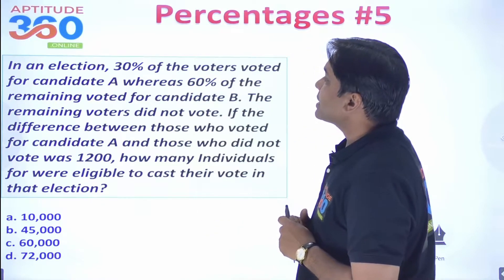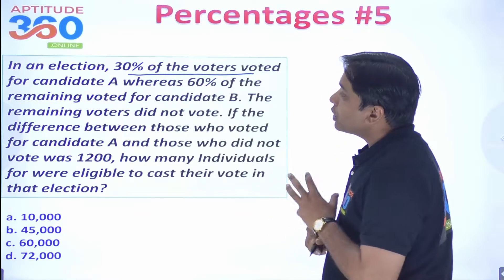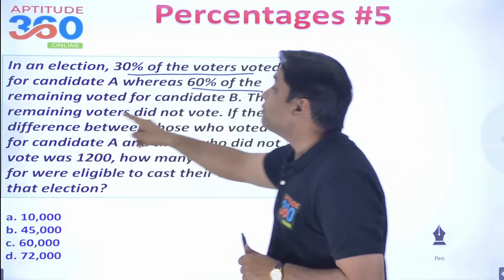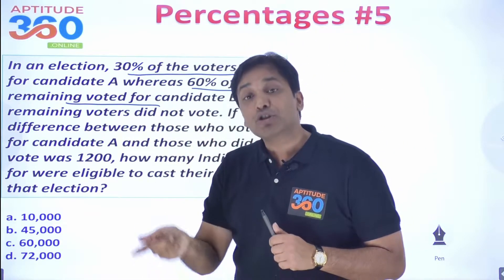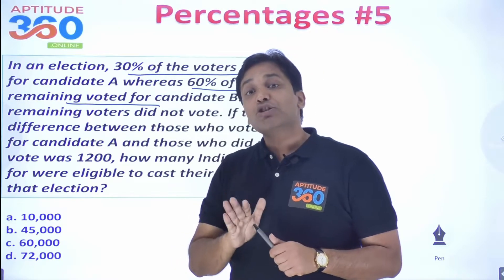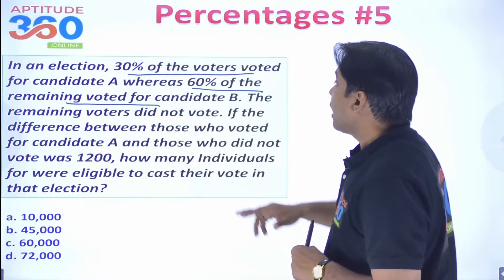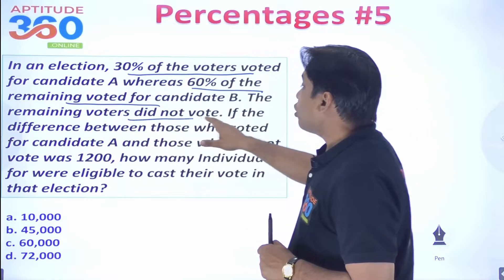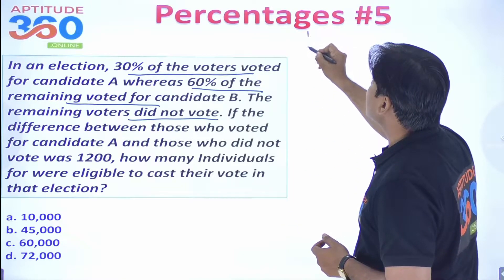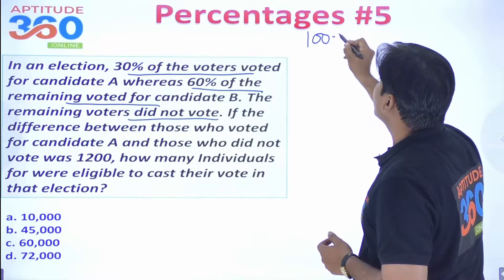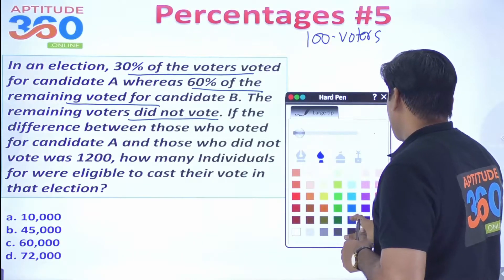The next problem: In an election, 30% of the voters voted for candidate A. 60% of the remaining voters — not 60% of all voters, but 60% of those remaining — voted for candidate number 2. The remaining voters did not vote. To simplify, let us take 100 total voters.